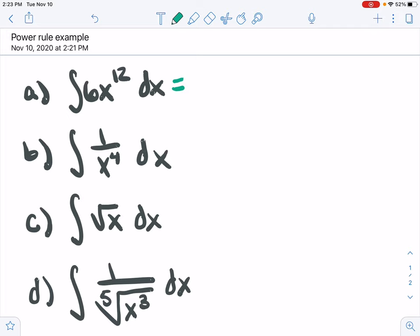We're just going to add 1 to the exponent and divide by that same amount. So this becomes 6x to the 13 over 13 plus C. You will lose points for not adding that plus C because that's a part of the antiderivative.